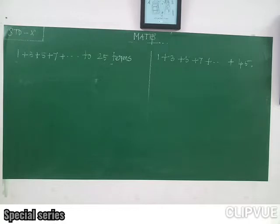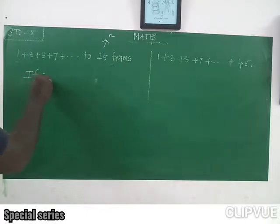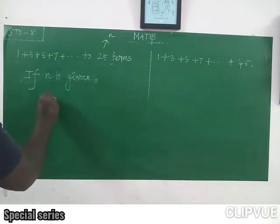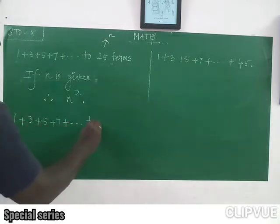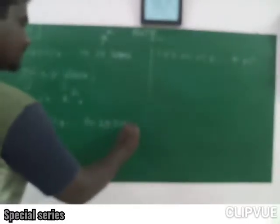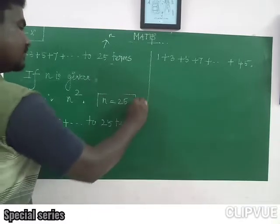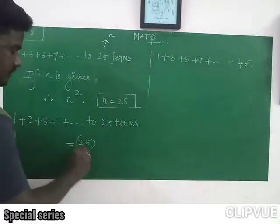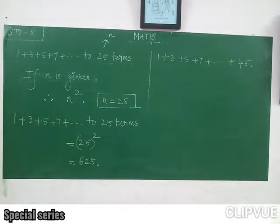Like 25 terms, how can we find? If n is given, the formula is n square. So we can write 1 plus 3 plus 5 plus 7 plus ... 25 terms is equal to n square, where n is equal to 25. So 25 square, which is equal to 625.